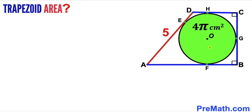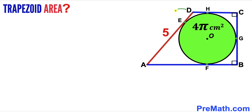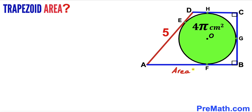Welcome to pre-math. In this video we have a green shaded circle with center O fully inscribed in trapezoid ABCD, such that E, F, G, and H are the points of tangency. The area of this green shaded circle is 4π centimeter square, the side length AD is 5 centimeters, and our task is to calculate the area of trapezoid ABCD.